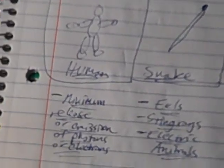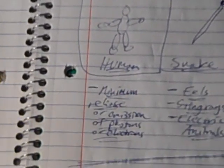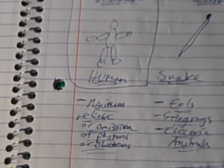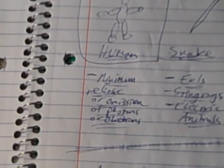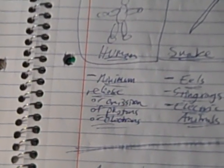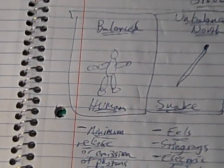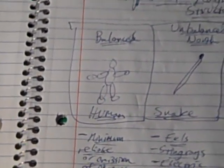Now, there's a couple things that are important to note about the human structure and the insights it gives into the unbalanced structures. One thing that's important is there's a minimum of release or emission of photons or electrons. So that means all of that, that the photon, whatever photon activity or electron activity is pretty much happening internally within a balanced system.